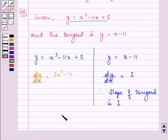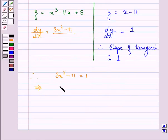We have the value of dy by dx as 1, so we can write that 3x square minus 11 is equal to 1, which implies 3x square equal to 12, which further implies x square is equal to 12 by 3, that is equal to 4.